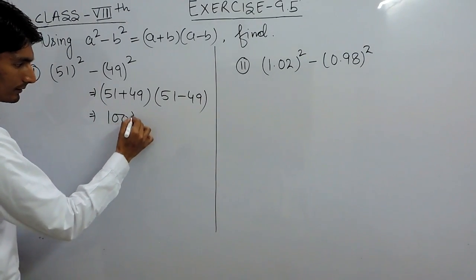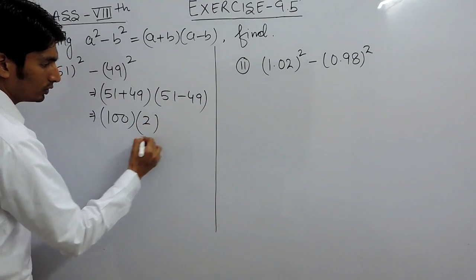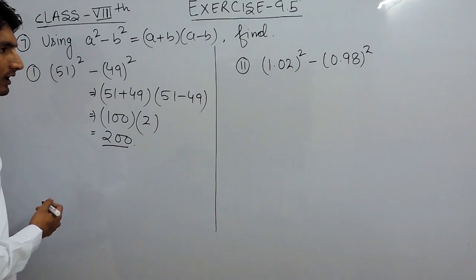This is 100 multiplied with - 51 minus 49 is 2. So, this should be 200. 200 should be the answer.